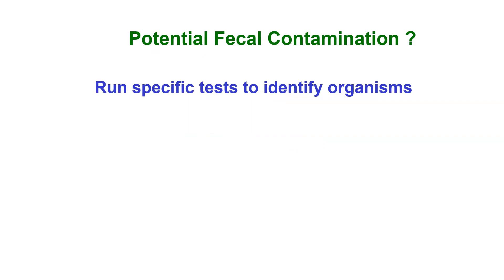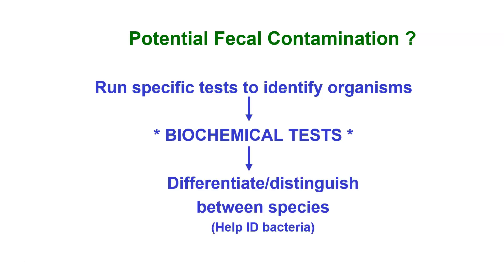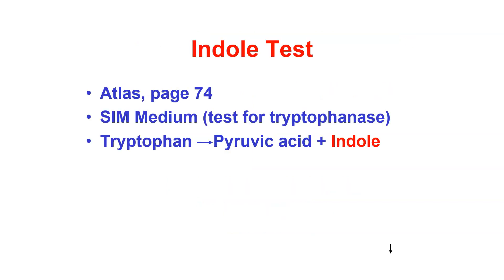To detect these organisms, we run specific tests to identify them. Bacteria are very tiny, so since we don't have much else to go on, we identify them using biochemical tests. These biochemical tests help us differentiate and distinguish between species — one species may be able to do something another cannot, and we use all of these differences to break them apart. There are a lot of different tests we are going to use, one of which is the indole test.